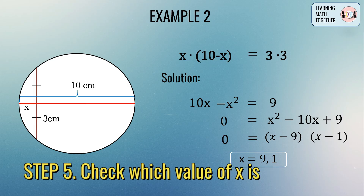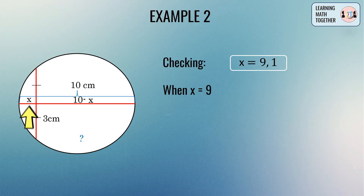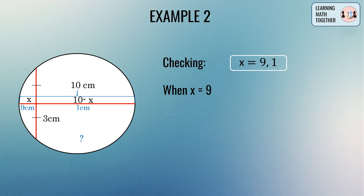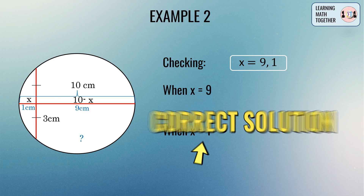We have two values for x, so we need to check which is correct by substituting back. When x equals 9, this segment is 9 centimeters and the other segment is 1 centimeter — but 1 centimeter cannot look longer than 9 centimeters in the figure, so x equals 9 is rejected. When x equals 1, this segment is 1 centimeter and the other is 9 centimeters, which matches the figure. Therefore, x equals 1.